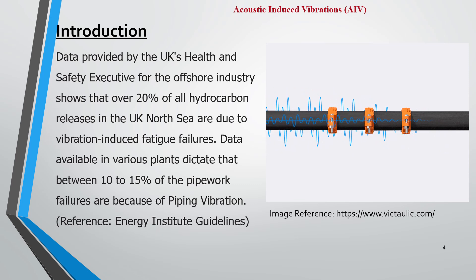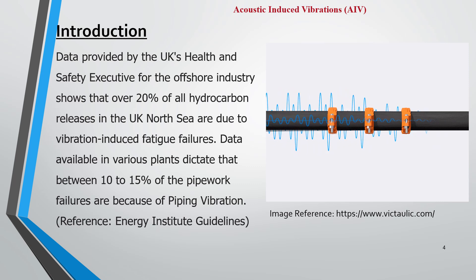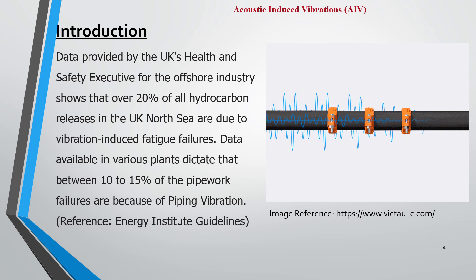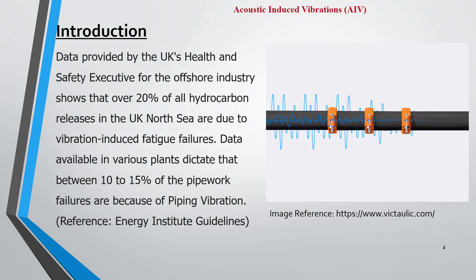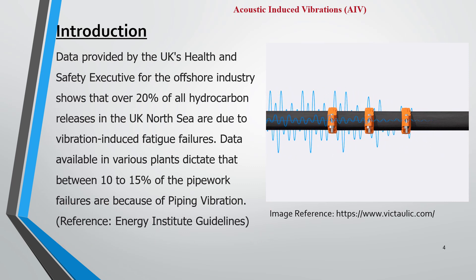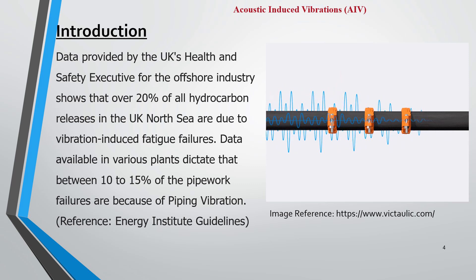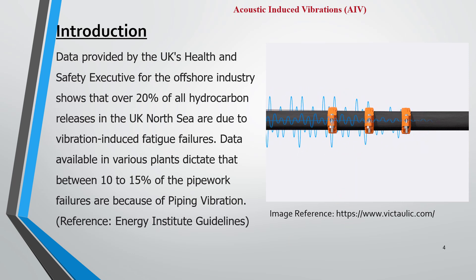Data available in various plants indicates that between 10 to 15 percent of pipework failures are because of piping vibration. Whatever failures happen in any piping or operating industry, 10 to 15 percent — which is a considerable amount — are caused by piping vibration. This reference is provided in a document from Energy Institute guidelines. The image shown illustrates how a piping system vibration can propagate, taken from victorulik.com.